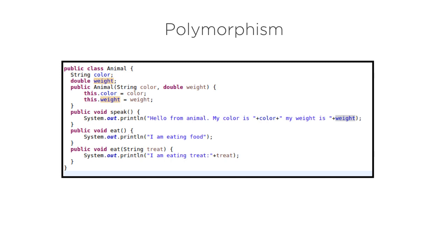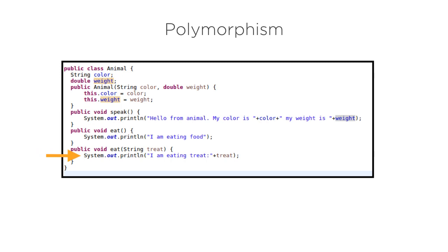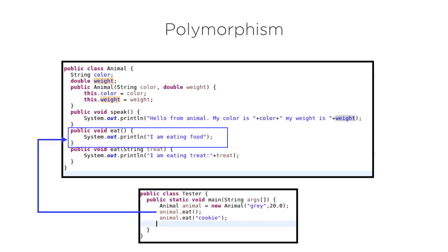Here is the Java class for an animal where it has attributes for color and weight, a constructor to initialize the color and weight, a speak method, an eat method without arguments inside which we are just printing 'I am eating food.' Here is another method with the same name eat, but it has a parameter of type String called treat, inside which we are printing 'I am eating a treat.' So when we call eat with no parameters, the first method is called. When we call eat with a parameter, the second method is called. This is static polymorphism where calling the same method name would invoke different actions based on parameters.